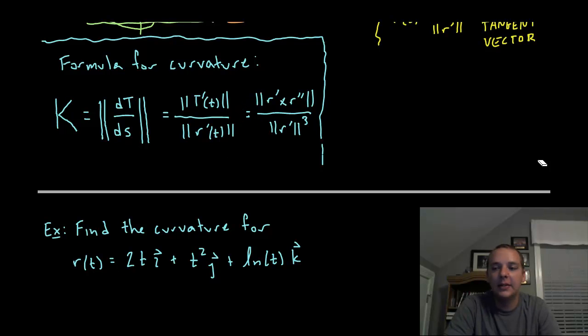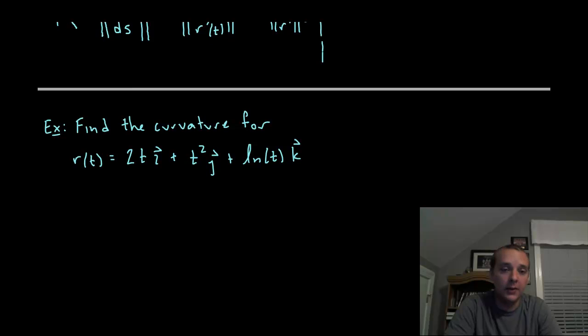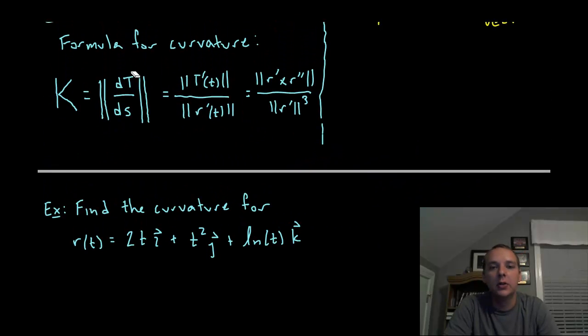Right off the bat I see that r of t is not obviously a function of s, so I'm going to drop this one. I would probably use one of the other two. It's a little bit of algebra to compute T prime, but I'm kind of leaning towards the third option.